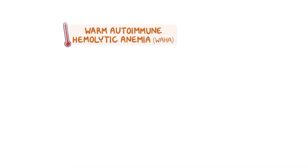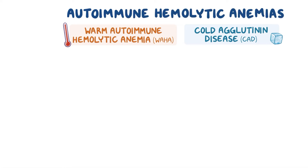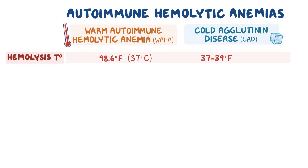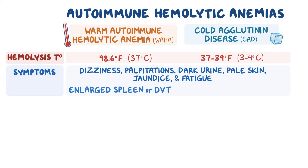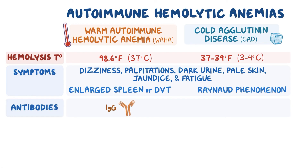As a quick recap, warm autoimmune hemolytic anemia, or WAHA, and cold agglutinin disease, or CAD, are autoimmune hemolytic anemias characterized by the production of autoantibodies that cause early destruction of healthy red blood cells. Hemolysis occurs at body temperature in WAHA and is promoted by cold temperatures in CAD. Symptoms vary based on severity and include dizziness, palpitations, dark urine, pale skin, jaundice, and fatigue. Individuals with WAHA may also develop an enlarged spleen or deep vein thrombosis, whereas individuals with CAD may experience Raynaud phenomenon. IgG antibodies are primarily responsible for WAHA, whereas IgM antibodies are responsible for CAD.